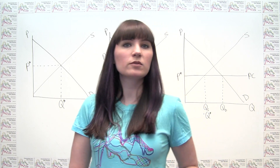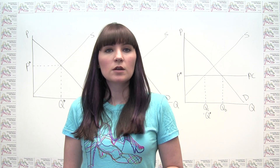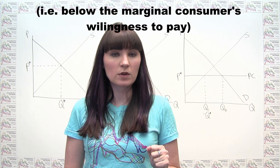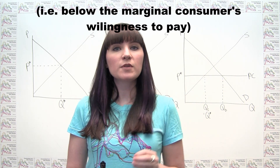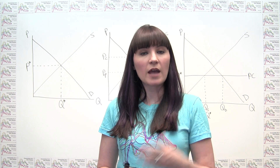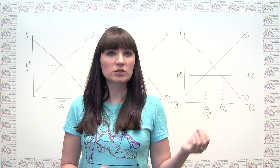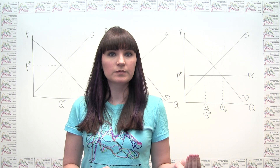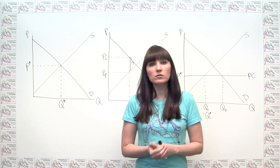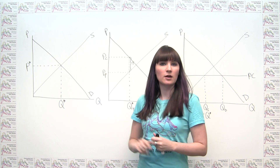We can always use three simple rules to identify consumer surplus in a supply and demand diagram. Consumer surplus is the area that is: one, below the demand curve; two, above the price that the consumer pays for the item; and three, to the left of the equilibrium quantity, or the quantity that's actually transacted in a market. We have three examples where we can apply these three rules to get a correct identification of consumer surplus.